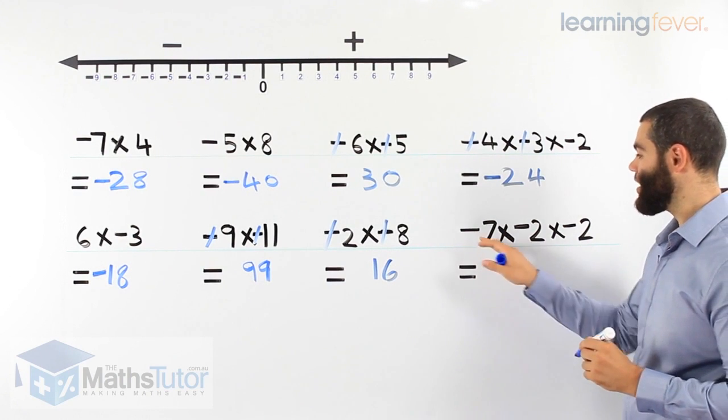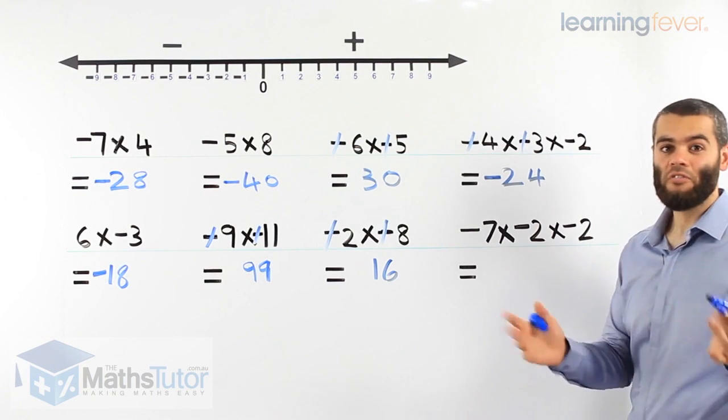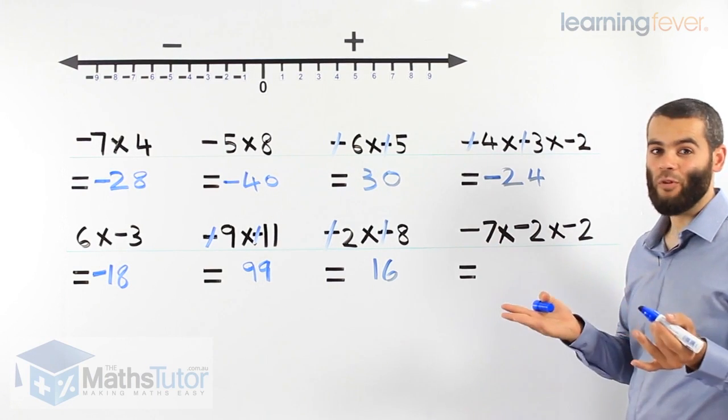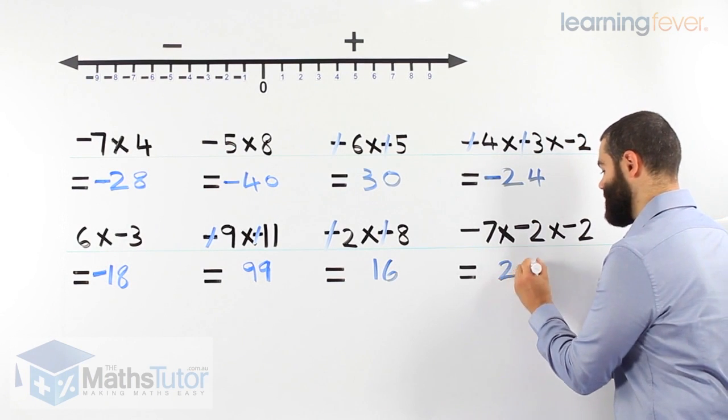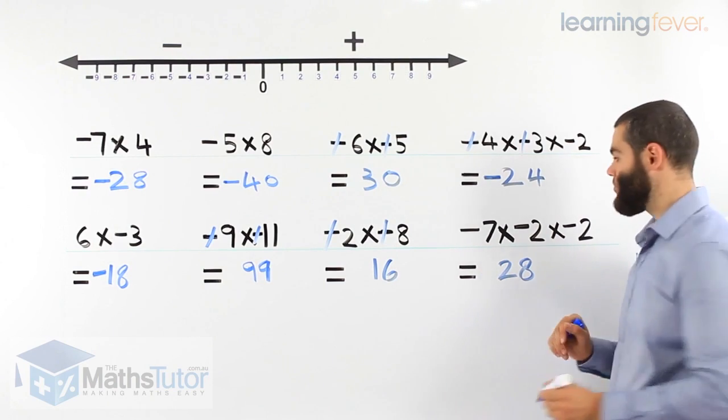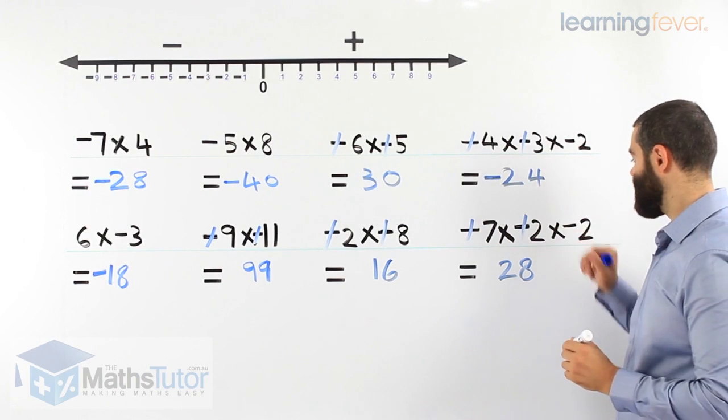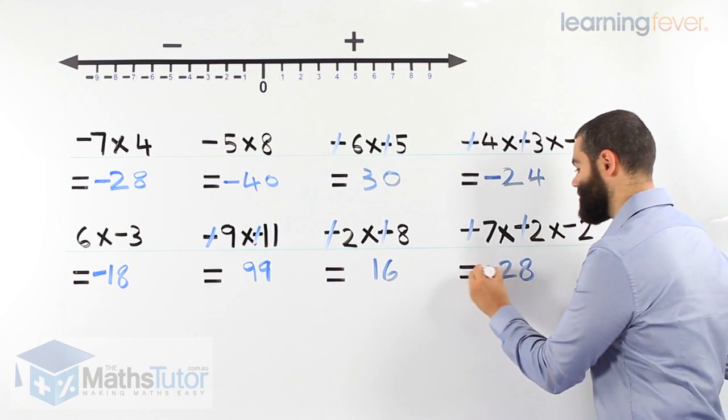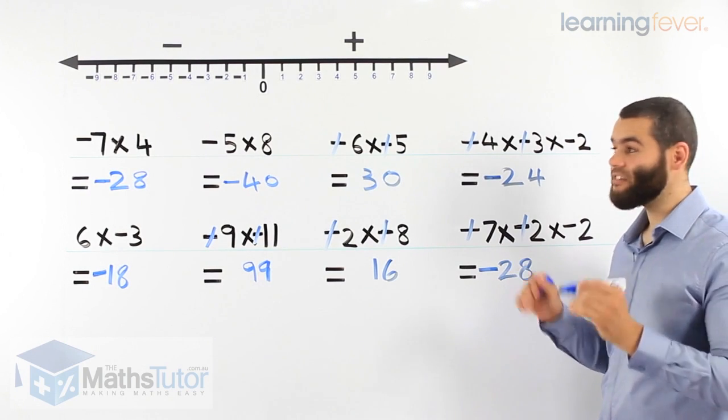Same concept. Negative 7 times negative 2 times negative 2. Let's do the multiplication. 7 times 2, 14. 14 times 2, 28. Now, we look at the negatives. These guys partner up. See you later. They're gone. And this guy has no friends, he stays in the answer. Negative 28. It is that simple.